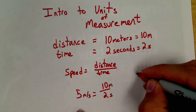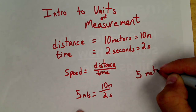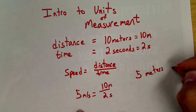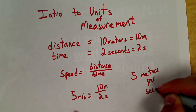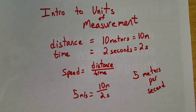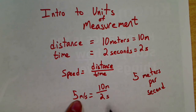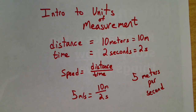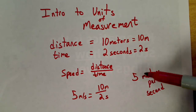So my speed is 5 meters per second. See how that works out — meters per second, meters divided by seconds. When I say 'per,' I really mean division. So those will always work out nicely like that.